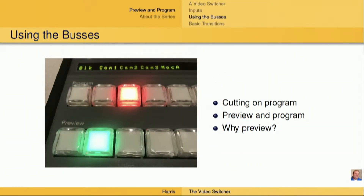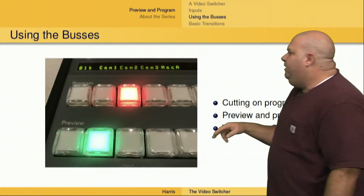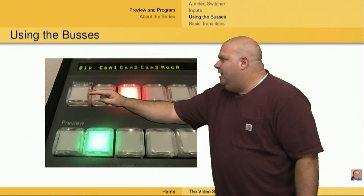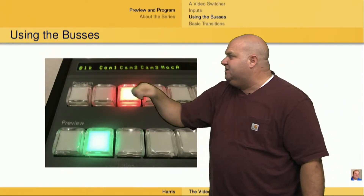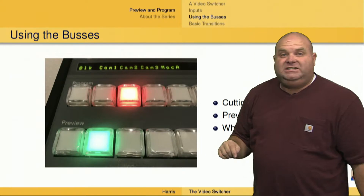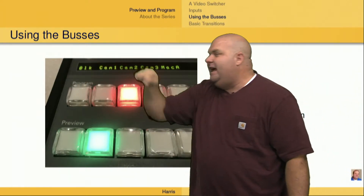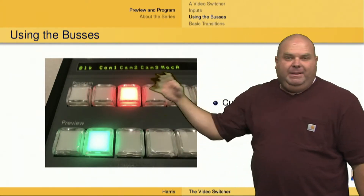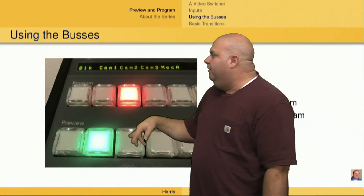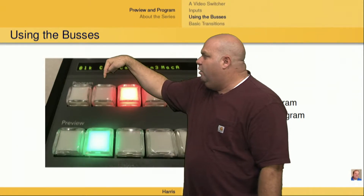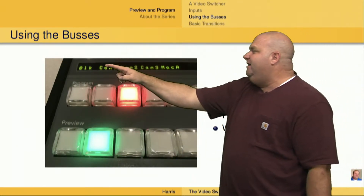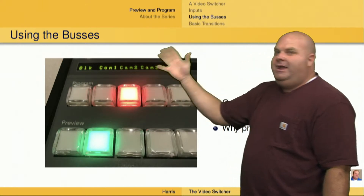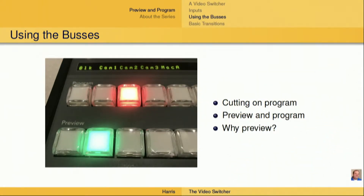As far as using the buses, we could cut a program just by changing things right here on the program bus. In other words, if I just want to cut to black, I could just push that button right there and immediately black would be cut on our finished picture. Or if I want to cut to camera one, I could just push that button. Camera one would be sent out to program and would be out to tape or out to live, or be a part of our recording.